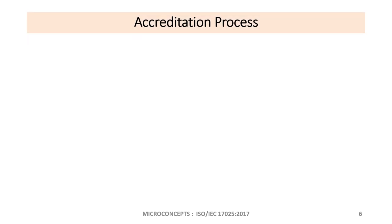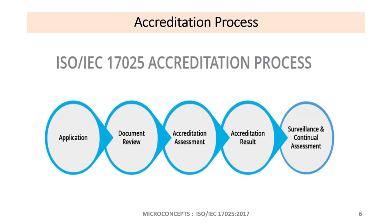The ISO/IEC 17025 accreditation process involves: first, you apply online. Then the accreditation body — NABL in India — carries out a document review. Then an accreditation assessment is conducted, which is an on-site laboratory assessment. Based on the assessment results, your laboratory is given accreditation, and then it must follow ongoing surveillance or continual assessment. Generally, accreditation given by NABL in India is valid for two years.